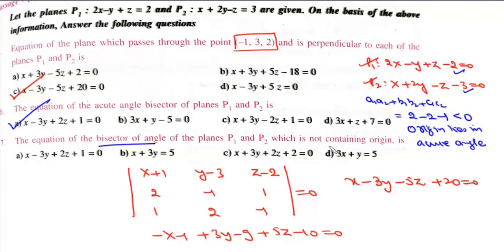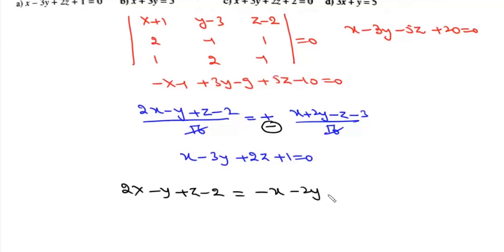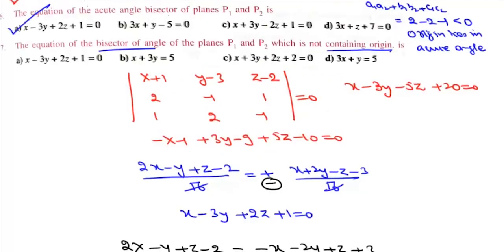For the bisector not containing the origin, we take the minus sign: (2x - y + z - 2)/√6 = -(x + 2y - z - 3)/√6, giving 3x + y - 5 = 0 — option d.